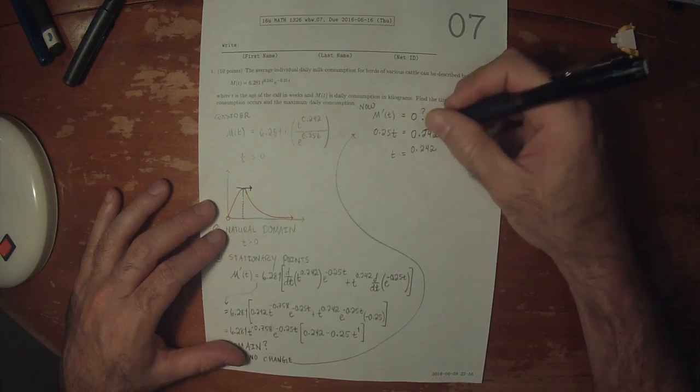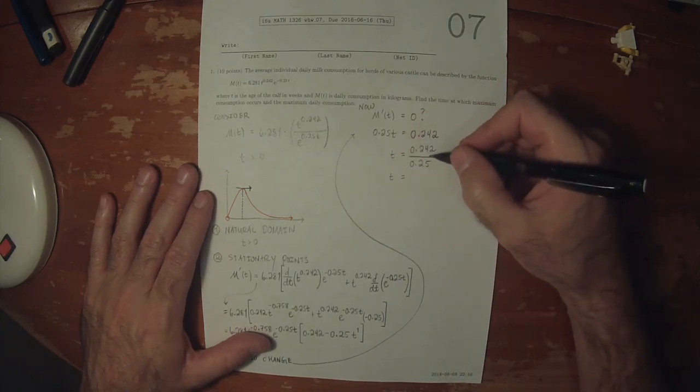So now we want to know, is there anywhere that the derivative is 0? And the answer is yes, whenever this factor is 0. So that is to say, that 0.25 t is equal to 0.242. So t is equal to 0.242 divided by 0.25. But division by 0.25 is the same as multiplication by 4. So that's t equals 0.968.